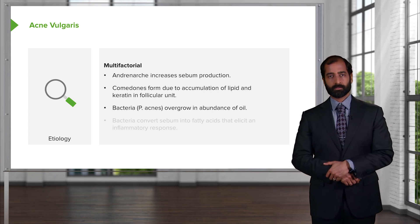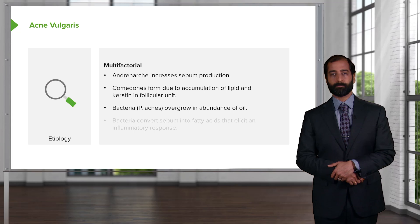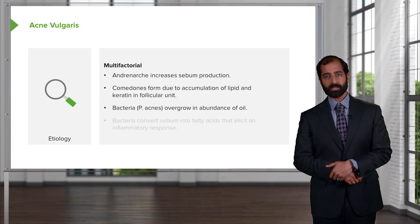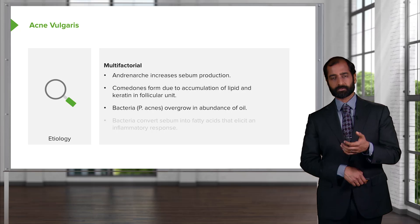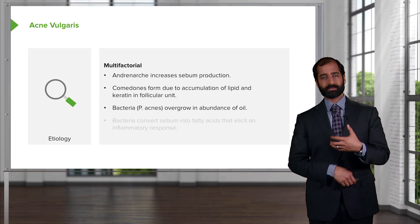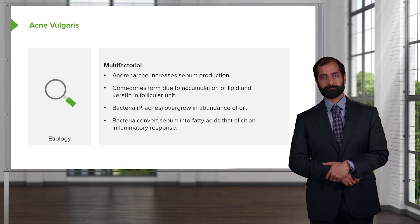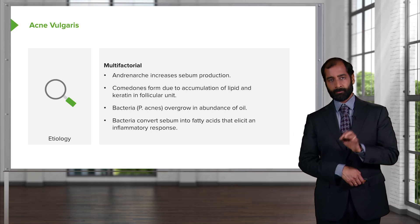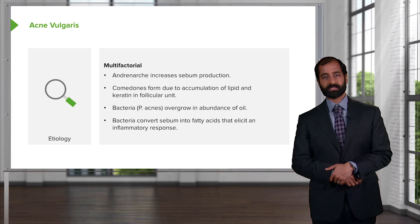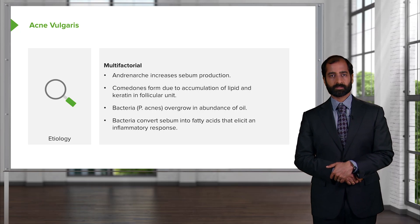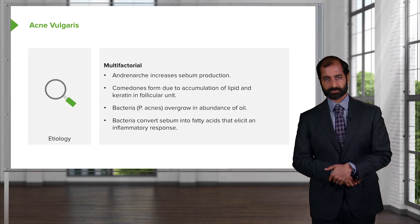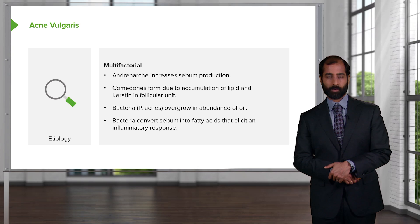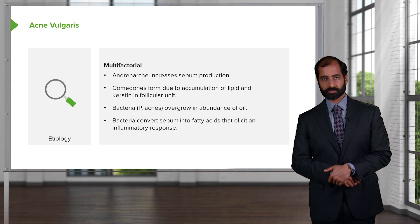An important bacteria here is Propionibacterium acnes. This bacteria overgrows in the abundance of sebum and lipid accumulation within the comedone. The bacteria convert the sebum into fatty acids that elicit an inflammatory response. As soon as you think about inflammatory response, WBCs such as neutrophils are going to come in — all part of the pathogenesis of acne vulgaris.